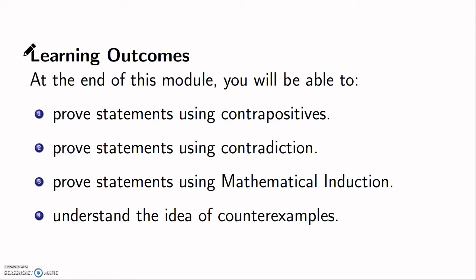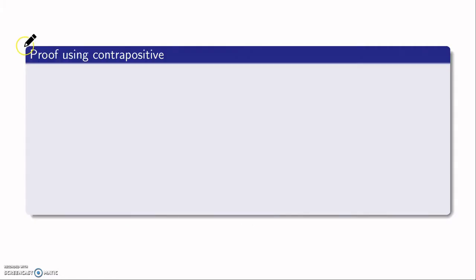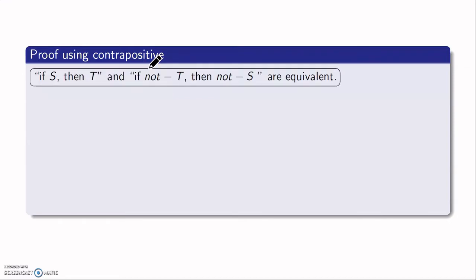The first topic is proofs using contrapositives. In our earlier videos, you have already seen what the contrapositive of an implication is. For a statement of the form 'if S then T', its contrapositive is 'if not T then not S'. These two statements are equivalent, so proving the first one is as good as proving the second one, and vice versa.